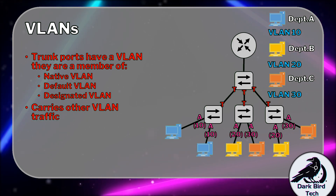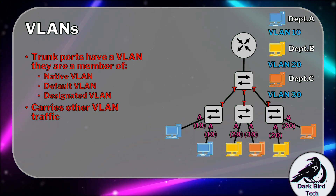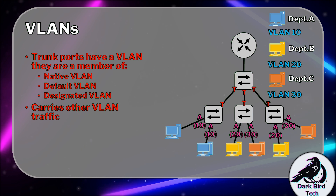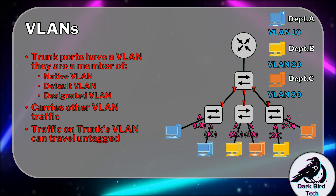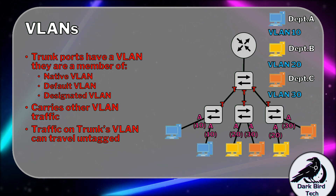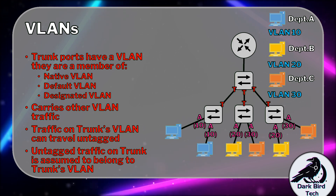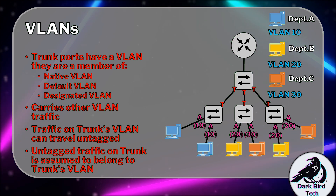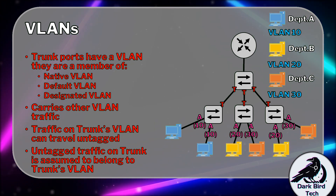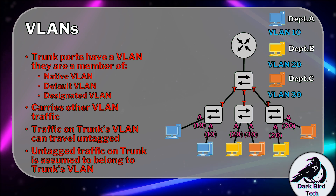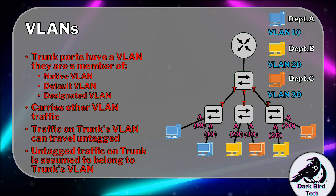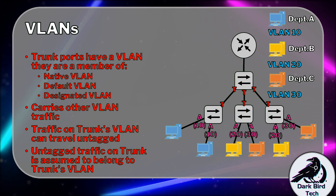This VLAN is either going to be called the native VLAN, the default VLAN, or the designated VLAN, depending on which network vendor you're talking about. But its goal is to carry the other VLAN traffic. This default or native VLAN used between the trunk ports is going to be the thing that carries that traffic — you can consider it a transport VLAN. The traffic on the trunk's native VLAN can travel through it untagged, and any untagged traffic through a trunk is assumed to belong to it. So if the trunk ports use VLAN 5, any traffic for VLAN 5 is allowed to travel across the trunk port without a tag, and the receiving trunk port will assume that traffic belongs to VLAN 5. But for VLANs 10, 20, and 30, they will have to travel across the trunk port with a tag, which is why traffic is only allowed through if it's specified as an allowed VLAN.